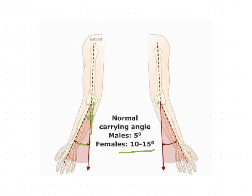A study measuring 600 elbows in a pediatric population from 4 months to 18 years found that girls had a larger range of motion in extension than boys, and that the increased elbow extension range of motion in girls is due to a larger carrying angle.